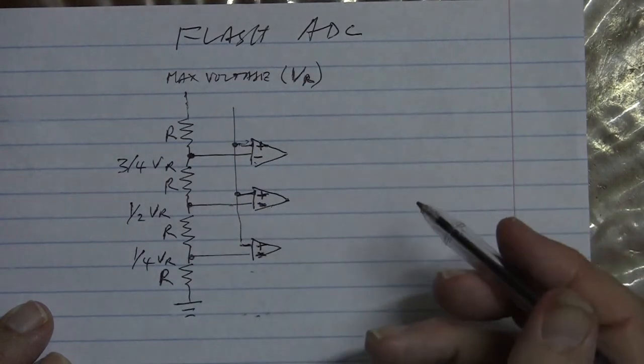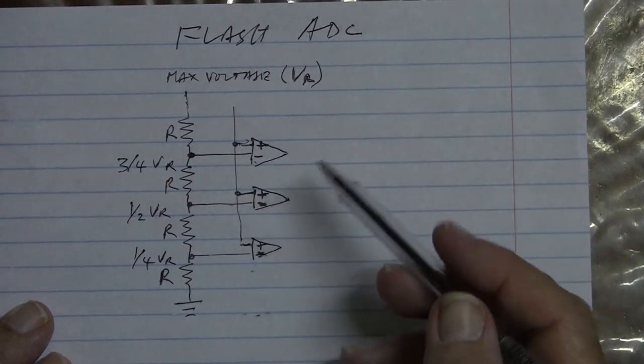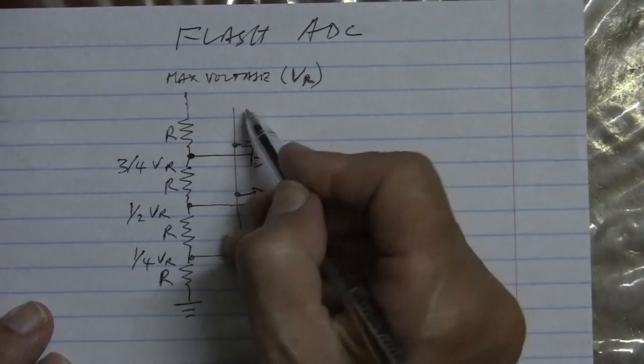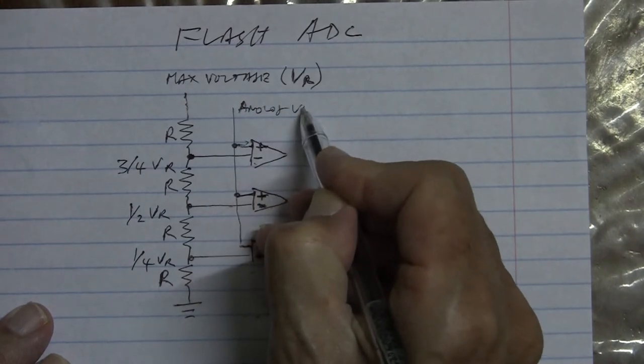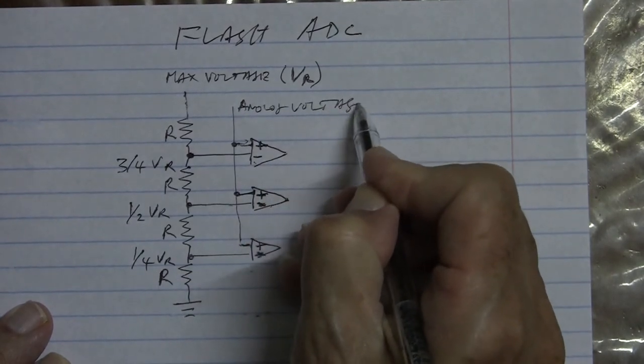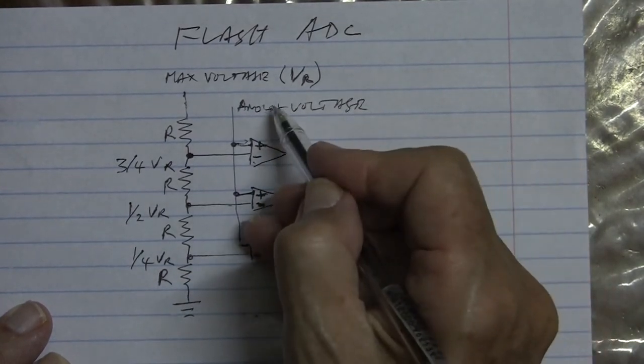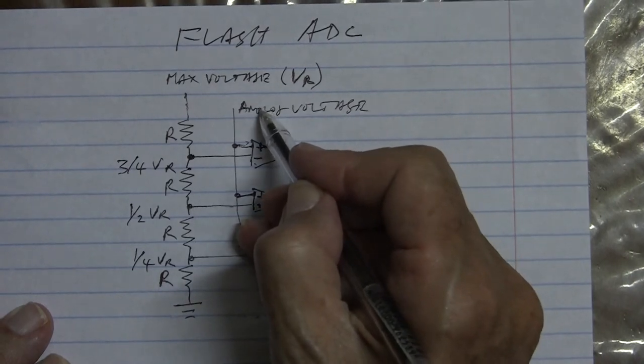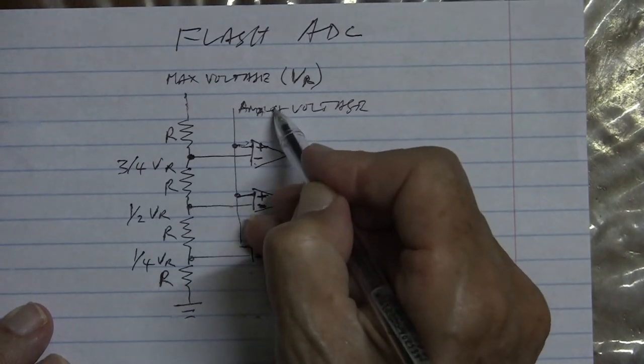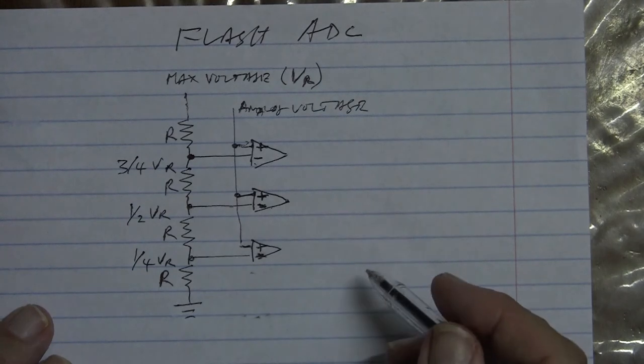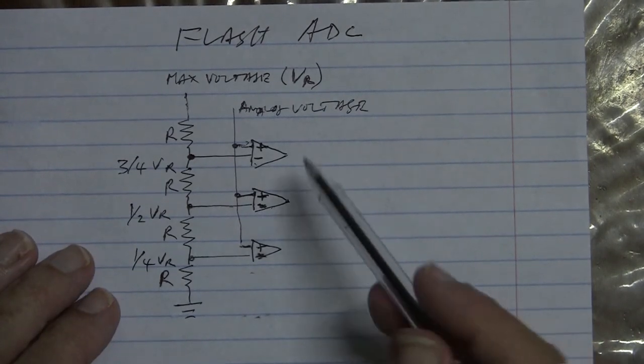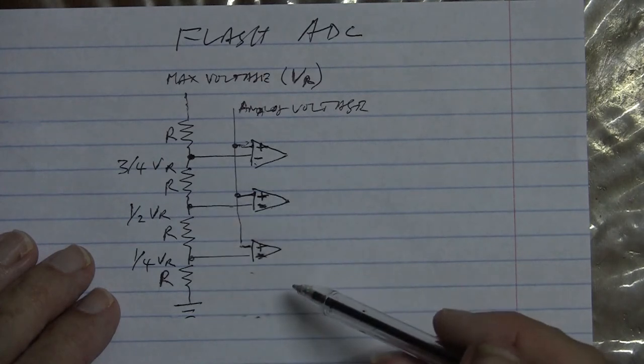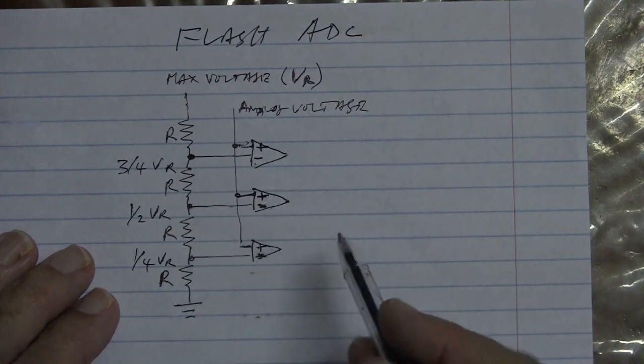All the positive inputs are connected together. So here we have a variable. Here is the analog voltage that we are trying to measure. Remember the analog voltage is being measured against these fixed voltages.